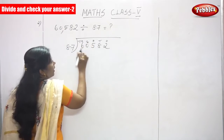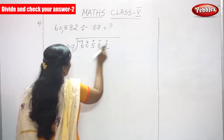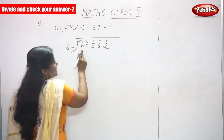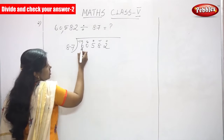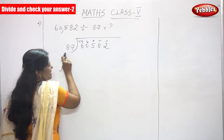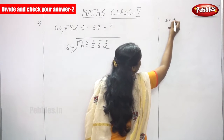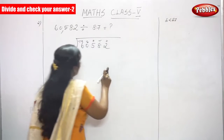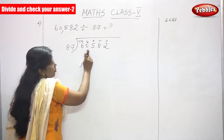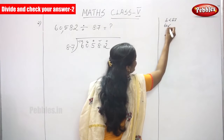This is the dividend and this is the divisor. You have to consider the digits first. First, you take the single digit that is 6. 6 is less than 87, so you can't divide. Go to the next digit, that is 0. Now 60 — again, 60 is also less than 87.